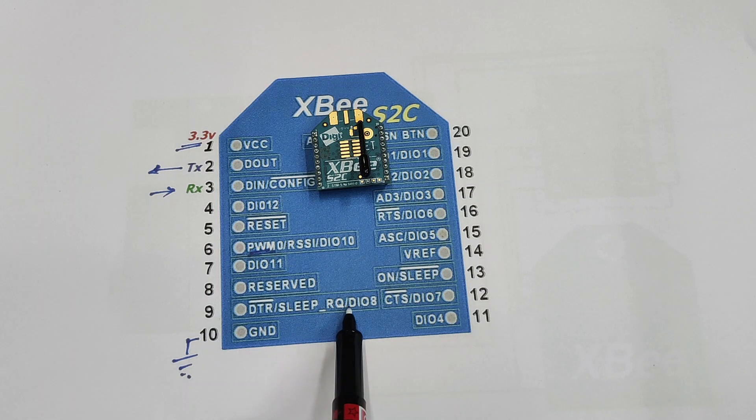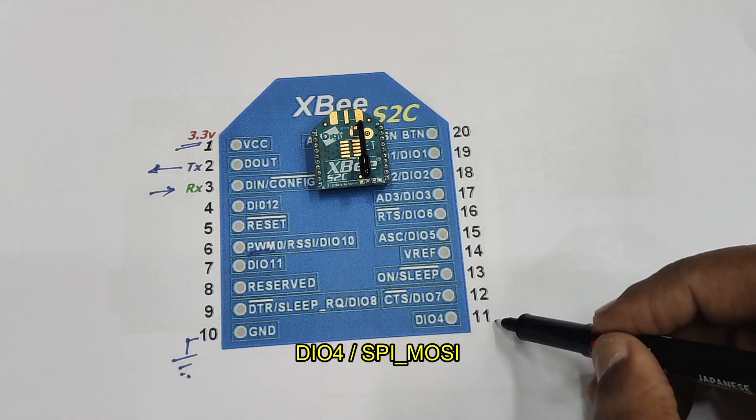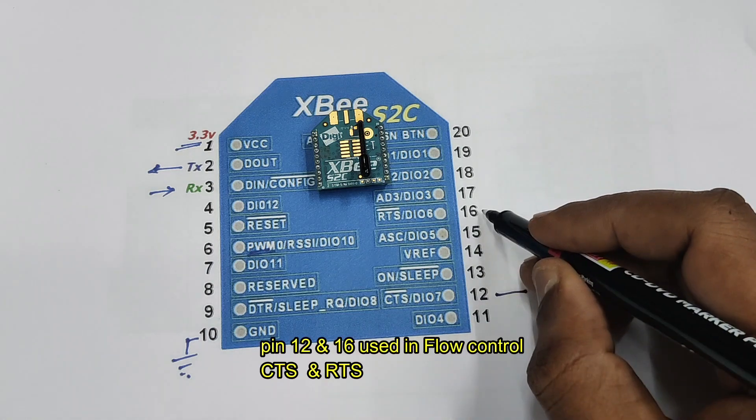When pin 9 is pulled high it will hibernate and go to sleep mode 1. Other sleep modes SM 4 and 5 are cyclic sleep modes configured from XCTU.